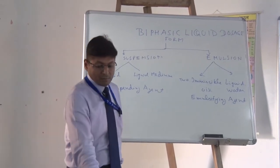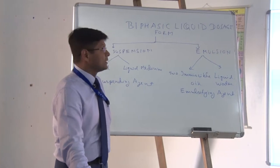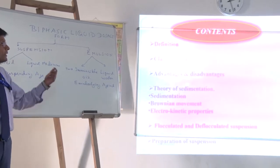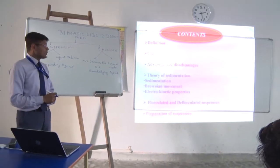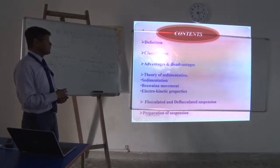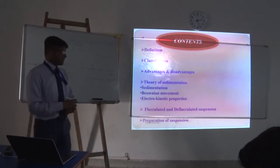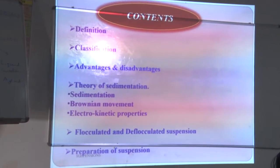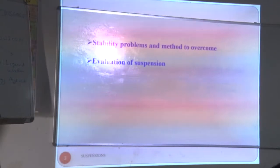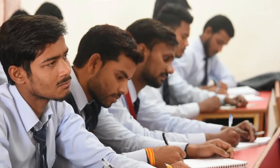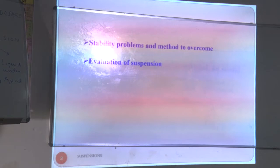Now we will start with pharmaceutical suspension. In this topic, we will cover: definition, classification, advantages and disadvantages, theory of sedimentation — including what is sedimentation, what is Brownian movement, and electrokinetic properties — flocculated and deflocculated suspension, preparation of suspension, stability problems and methods to overcome them, and finally the evaluation of suspension.